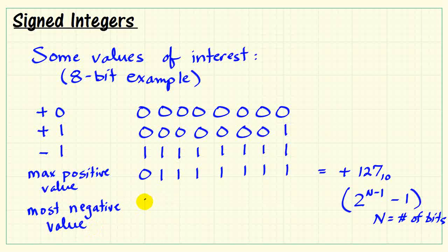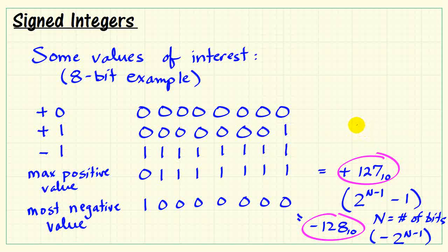Our most negative value occurs when we activate the large negative weight but do not activate any of the remaining positive weights. We know that MSB has a weight of minus 128 base 10. In a general sense, we could write this as minus 2 raised to the n minus 1 power. It's also interesting to note that we have a slight bit of asymmetry here. That is, the most positive and most negative values are not exactly the same in terms of absolute value.